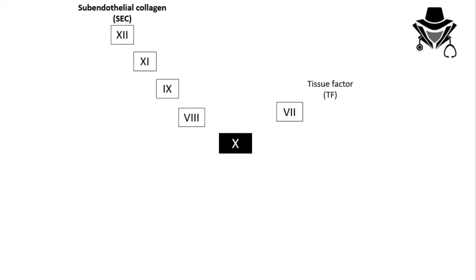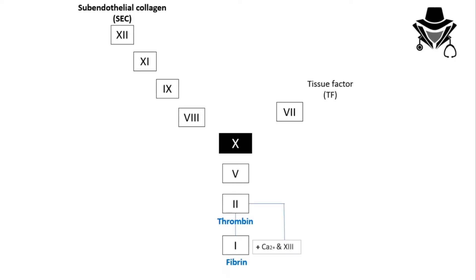In the common pathway: factor 10 activates factor 5, factor 5 activates factor 2 — called thrombin — and factor 2 activates factor 1 — called fibrin. Factor 2 also activates factor 13. So in the common pathway we have factors 10, 5, 2, and 1.